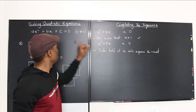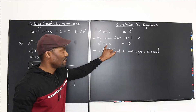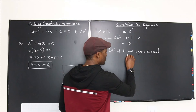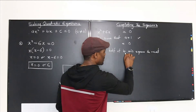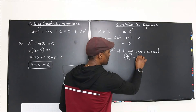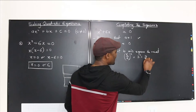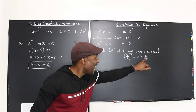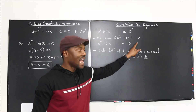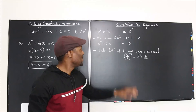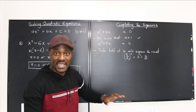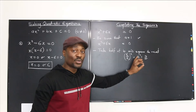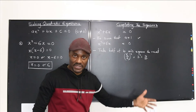Take half of b, which is the middle term. Half of 6 squared is 6 over 2 squared, which is 3 squared, which is 9. This 9 is what you add to both sides. You always add — it doesn't matter whether the sign is positive or negative, because even negative 6 divided by 2 gives negative 3, and negative 3 squared gives a positive.